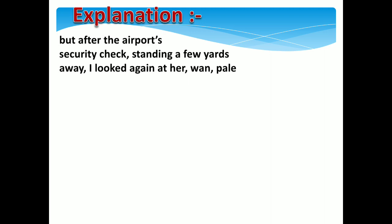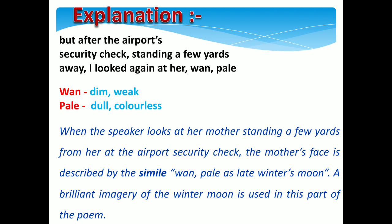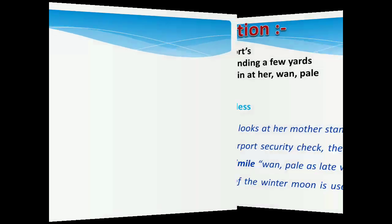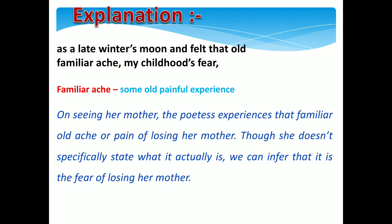When the speaker looks at her mother standing a few yards from her at the airport security check, the mother's face is described by the simile 'wan, pale as a late winter's moon.' A brilliant imagery of the winter moon is used in this part of the poem. The poetess sees the late winter's moon and felt that old familiar ache — her childhood's fear. On seeing her mother, the poetess experiences that familiar old pain of losing her mother, though she doesn't specifically state it. We can infer that it is the fear of losing her mother.